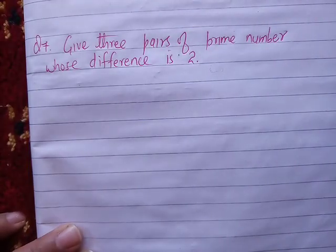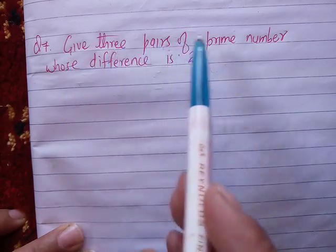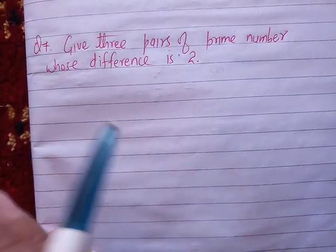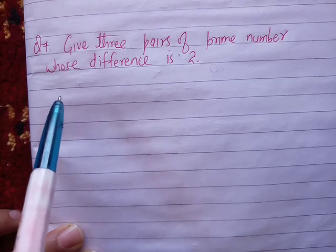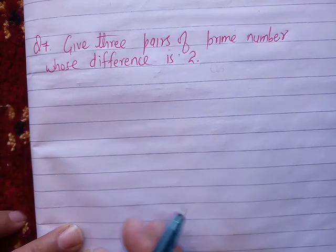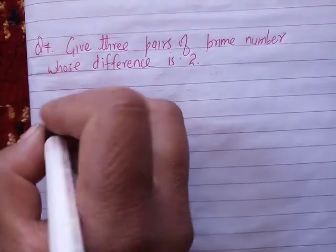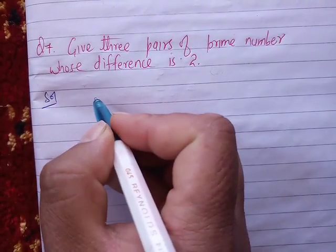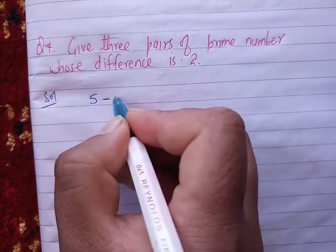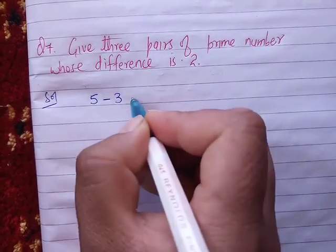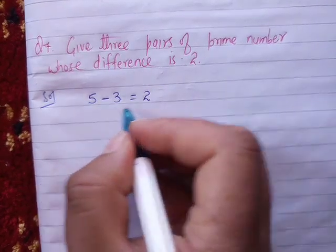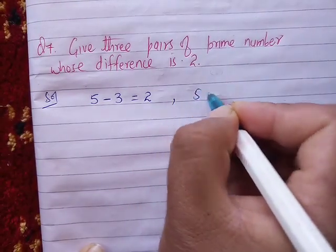Question number seven: Give three pairs of prime numbers whose difference is two. Five minus three equals two, so 5 and 3 are prime numbers. Next, seven minus five equals two, so 7 and 5 are another pair.